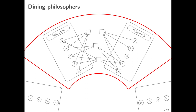This transition is possible for all philosophers. So Socrates has this transition as well as Friedrich. In the second step, the philosopher moves from waiting to eating, taking the fork of the neighbor. So in this case, Socrates moves from waiting to eating, taking Friedrich's fork from free to busy.